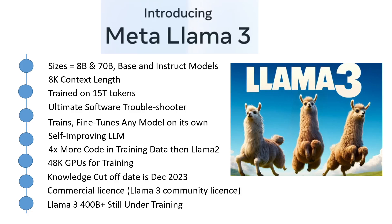I believe this is one of the world's leading AI assistants that can boost your intelligence and lighten your workload. Both the 8B and 70B models represent a major leap over Llama 2 and establish a new state-of-the-art at those scales. Meta has improved pre-training and post-training significantly, making their pre-trained and instruction fine-tuned models the best existing today at 8B and 70B.